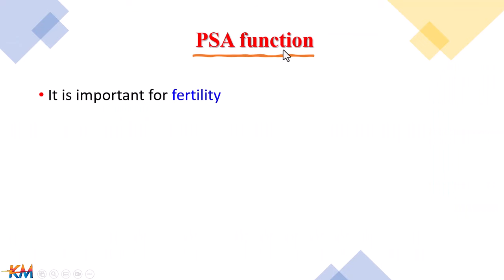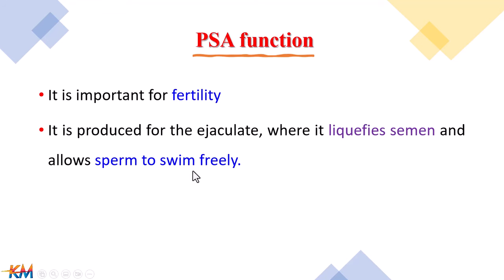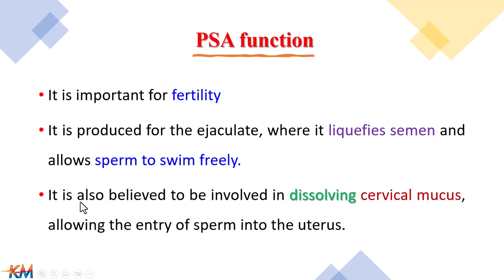Function of PSA: PSA is important for fertility in males because the prostate gland produces PSA for the ejaculate, where it liquefies the semen. Because PSA is a proteolytic enzyme, it liquefies the semen, which allows the sperm to swim freely from the ejaculate or seminal coagulum. Also, PSA has an important role in dissolving cervical mucus, allowing the entry of sperm into the uterus.